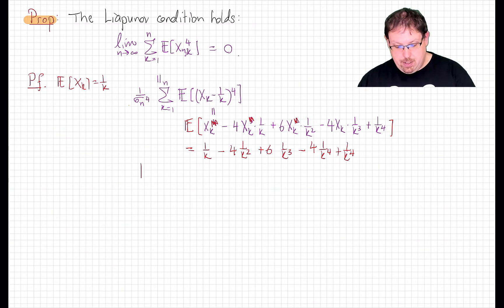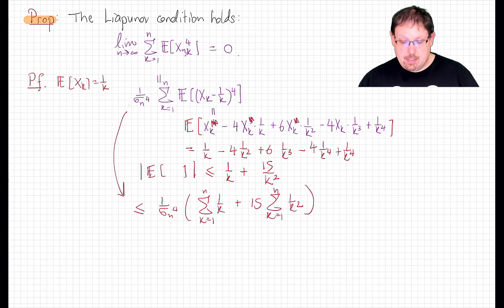And all that really matters here is that all of these are summable sequences in k. In fact, let's just note that therefore the absolute value of the expected value here is less than or equal to 1 over k plus a constant over k squared. That means that this Lyapunov term is bounded by this sum.